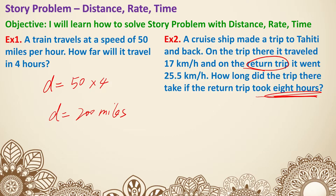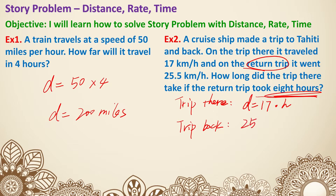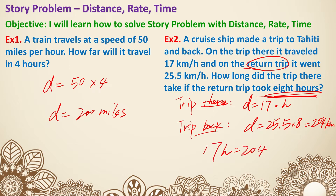For the trip back: distance equals 25.5 kilometers per hour times 8 hours, which gives 204 kilometers. Since the trip there and trip back are the same distance, 17 times H also equals 204 kilometers. Dividing both sides by 17 gives H equals 12 hours. So the key for this question is that the distance is the same.